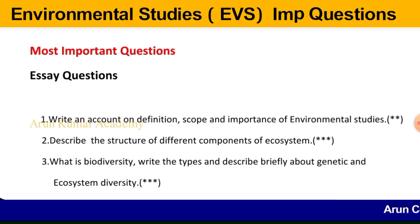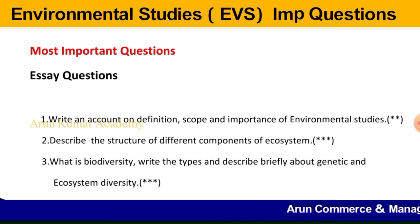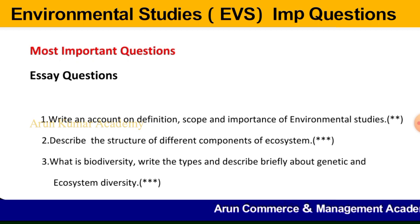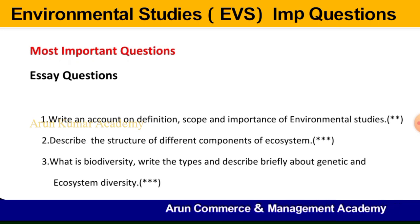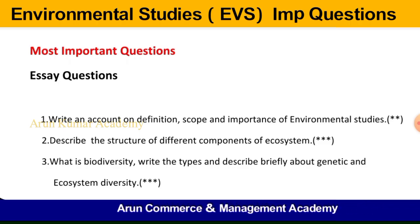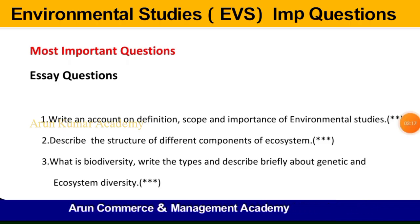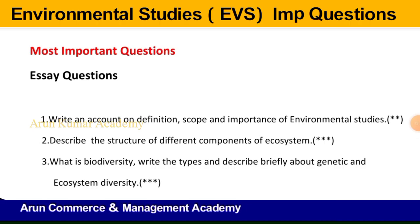The ecosystem includes two components: the first is abiotic components and the second is biotic components. You have to explain both in detail. Sometimes they may ask only about abiotic or biotic components, in which case you explain that component in detail.